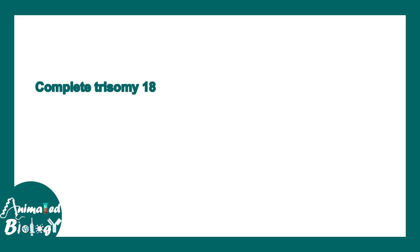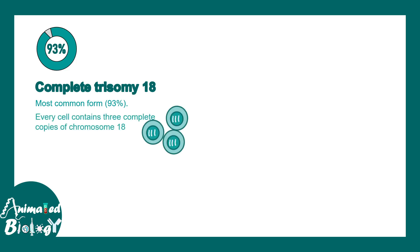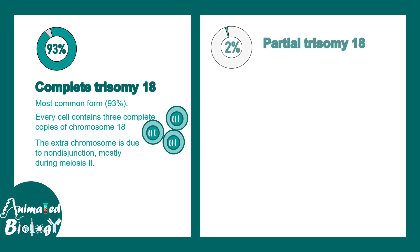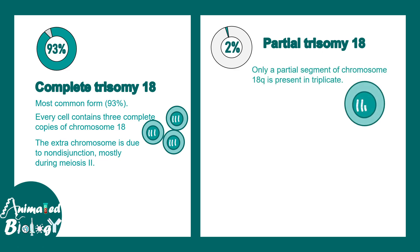There are different types of Edward syndrome. Complete trisomy 18 is the most common, accounting for 93% of cases, meaning every cell in the body has three copies of chromosome 18 due to non-disjunction. There is also partial trisomy 18, where the third copy doesn't contain the entire chromosome but only a segment of chromosome 18, such as 18q.